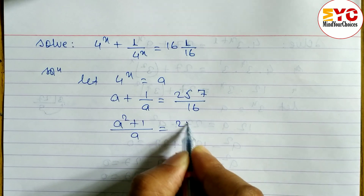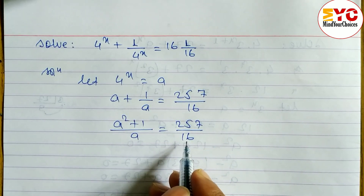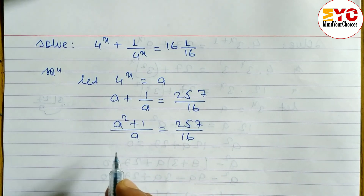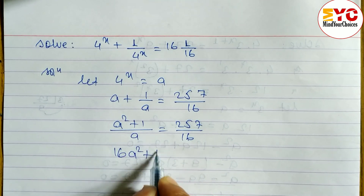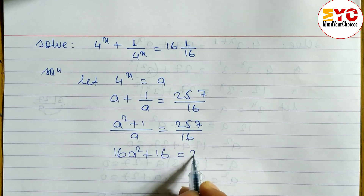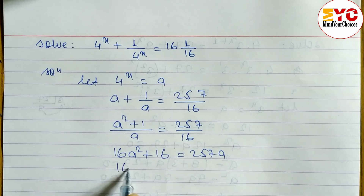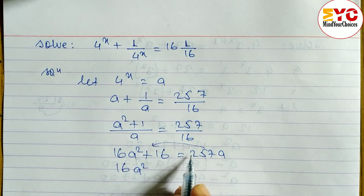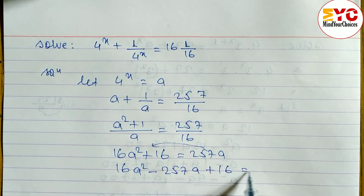Now we take LCM on the left side. LCM of a gives us (a² + 1)/a = 257/16. Now cross-multiplying: 16(a² + 1) = 257a, which gives us 16a² + 16 = 257a.